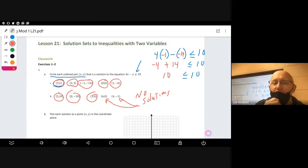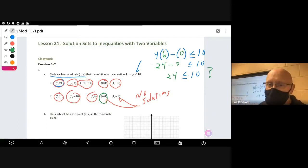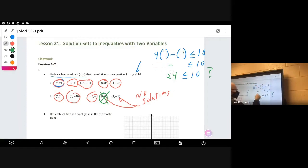These two are not solutions. Let's take a look at why 6, 0 and 4, negative 1 are not solutions. Let's plug in 6, 0. 4 times 6 is 24 minus 0. Is 24 less than or equal to 10? The answer is obviously no. That's why this is not a solution.